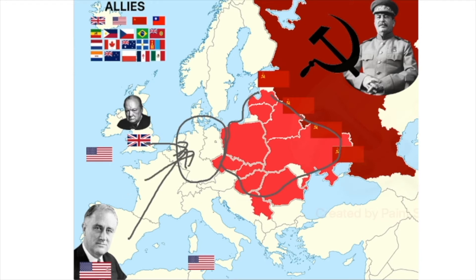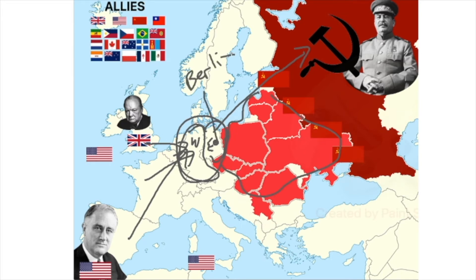Great Britain got a part, the USA got a part, and France got a part — all on the western side of Germany. The eastern side was given to the Soviet Union, but within the eastern side is Berlin, the capital city of Germany. This was a very important city and the allies felt that they couldn't give the whole city to the Soviet Union. Let's have more details in the next inserted video lesson.